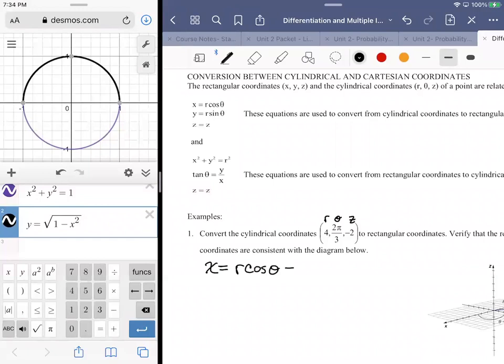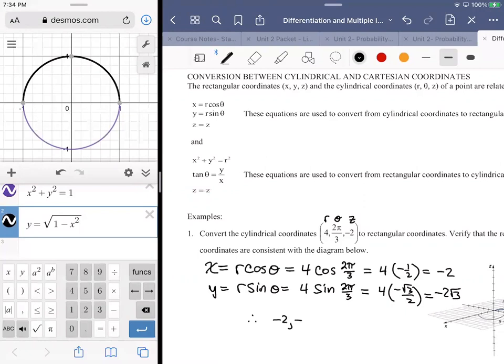So what I would do is figure out x by computing r cosine theta. In this case, x is 4 cosine 2π/3, so 4 times negative 1/2 is negative 2. y equals r sine theta, so 4 sine 2π/3, so 4 times negative √3/2, so negative 2√3. Therefore, the cylindrical coordinates would be (-2, -2√3, -2).